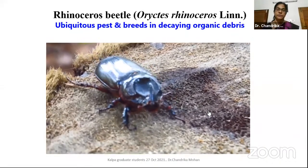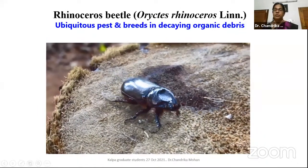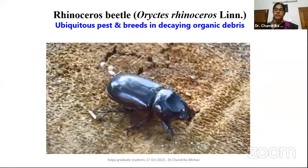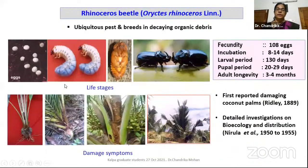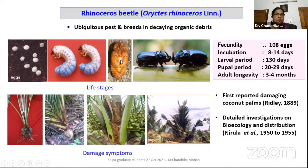The next pest is rhinoceros beetle — the most ubiquitous pest of coconut, seen throughout the world wherever coconut cultivation is there. The life cycle includes egg, grub, pupae, and adult. Eggs, grubs, and pupae are within reachable limits — only the adult is harmful here. Whereas in red palm weevil, all stages were harmful. All stages of rhinoceros beetle are found in decaying organic matter like decaying cow dung, compost pits, and decaying coconut logs.